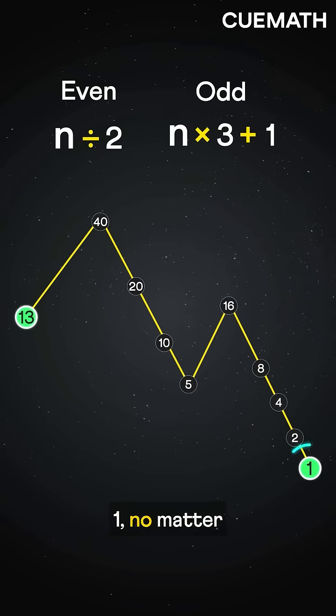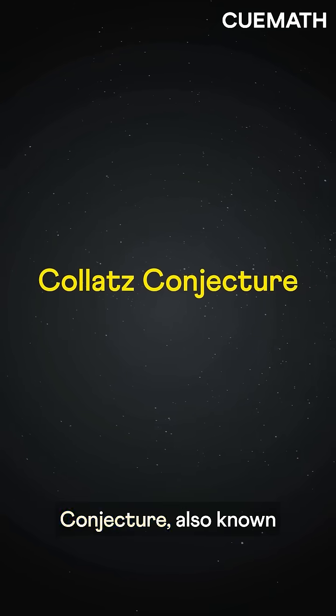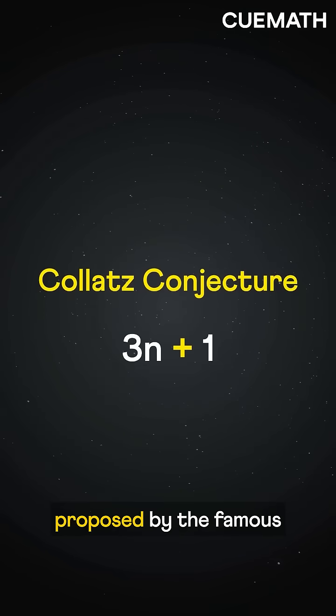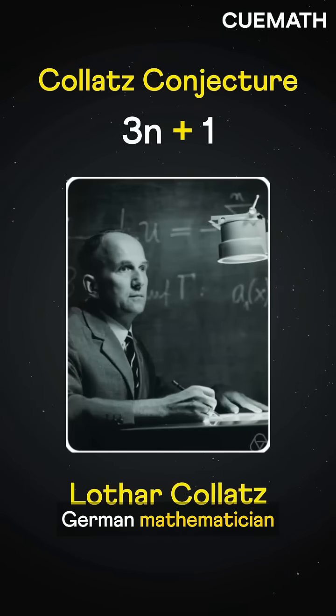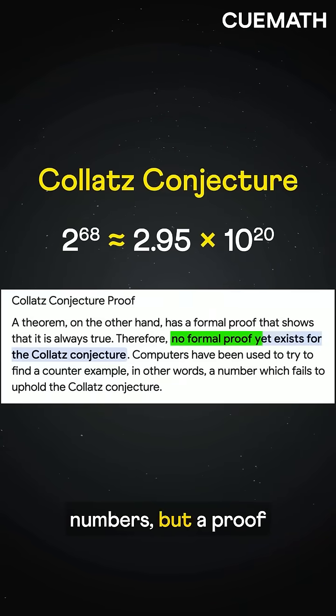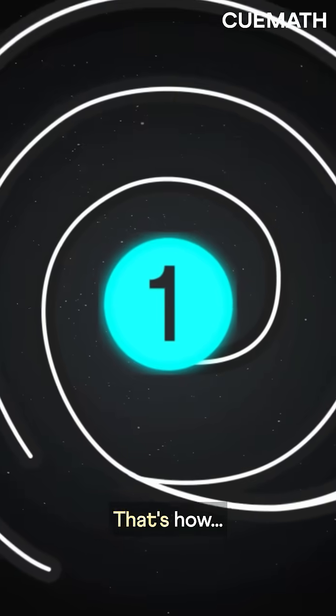We'll always reach one no matter where we start. This comes from the Collatz conjecture, also known as the three n plus one problem, proposed by the famous German mathematician Lothar Collatz. It has been verified for extremely large numbers, but a proof is yet to be found. That's how.